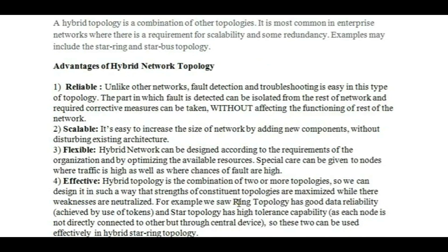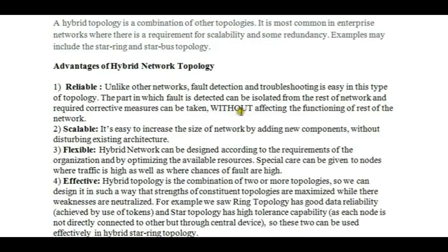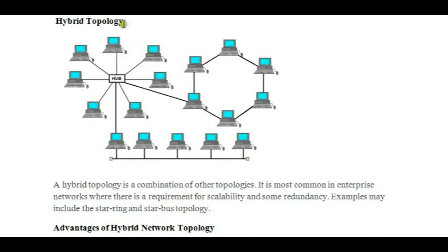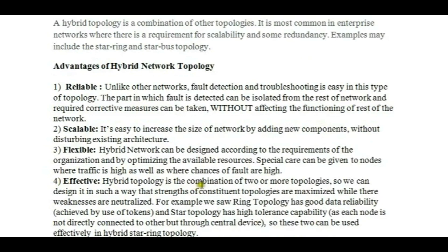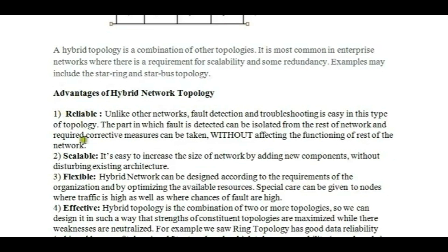Hybrid topology is also effective because it combines two different protocols. Ring topology uses a token system — a looping concept sending data from one computer to another in one direction. Star topology connects all devices to one single place. These two different characteristics make hybrid topology more effective, though it can also result in more traffic between networks. Overall advantages are: reliable, scalable, flexible, and effective.